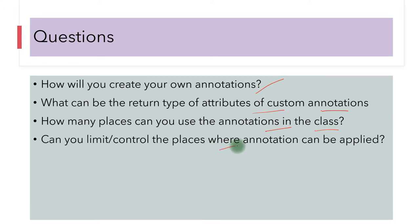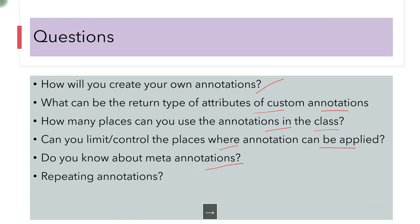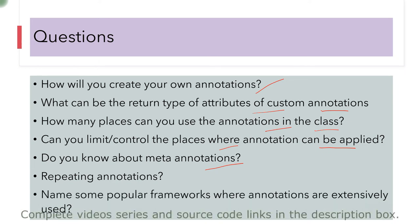Can you limit control the places where annotation can be applied? Yes, we can control it. Do you know about the meta annotations? Yes, we have explained it. Repeating annotations? Yes, also we know about it. We can use same annotations at the same label. And name some popular frameworks where annotations are extensively used. So we have talked about the spring framework. So these are just the questions and see if you know answers or not.